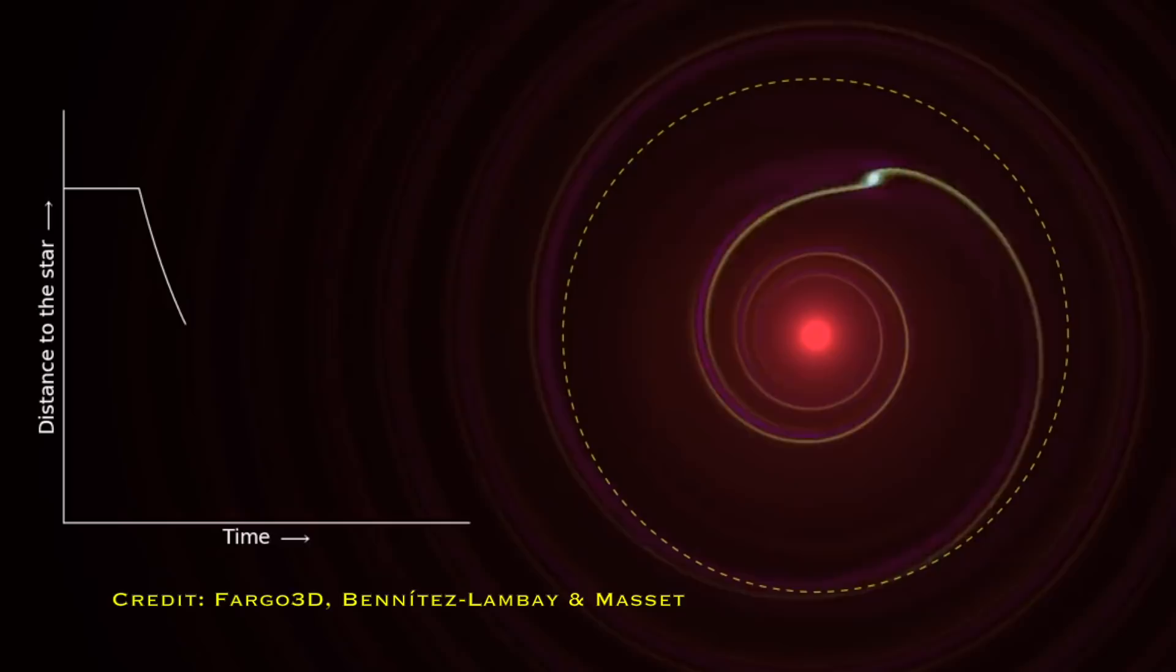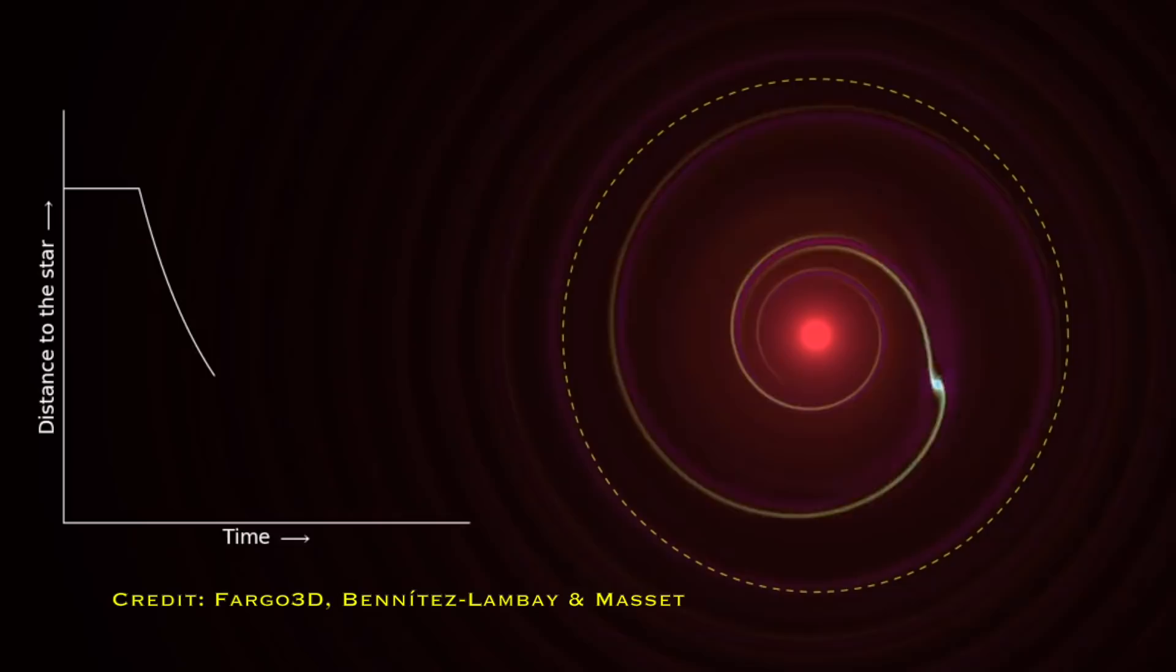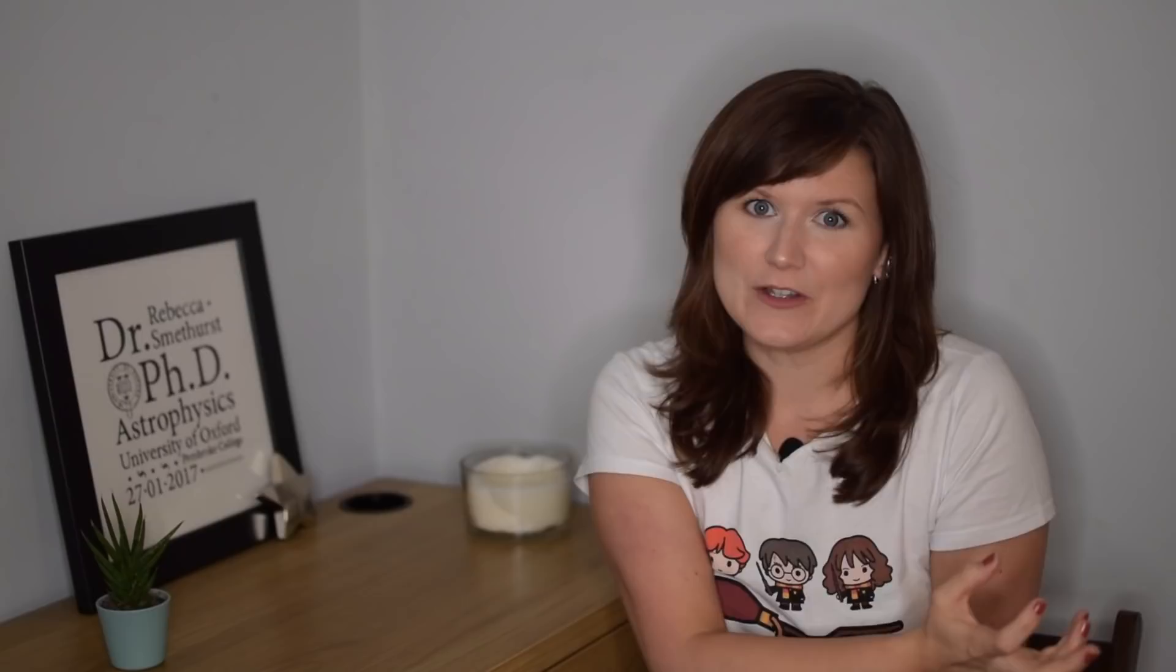People then started to consider the idea of planetary migration, where you could form something like Jupiter from the ices and the gas that were found well out from a star and then it could actually migrate and move inwards so that its orbit was ever smaller and smaller. Even now we actually think that was supposed to happen in our solar system, but Jupiter was held back from doing that by the presence of Saturn. So we should all be very thankful for Saturn, it's why it's my favourite planet.